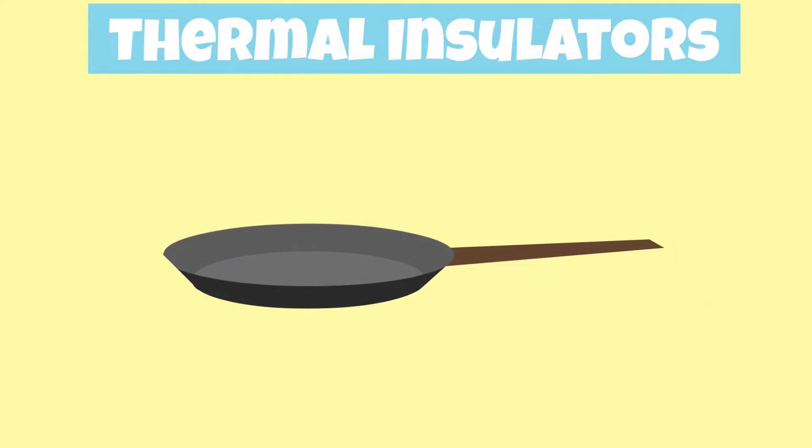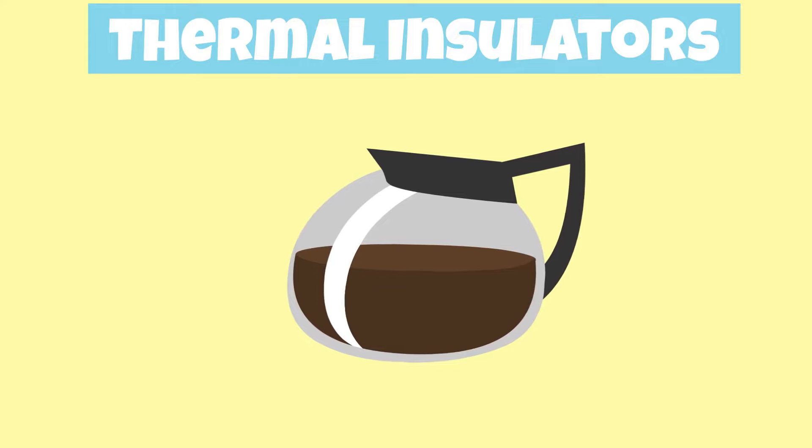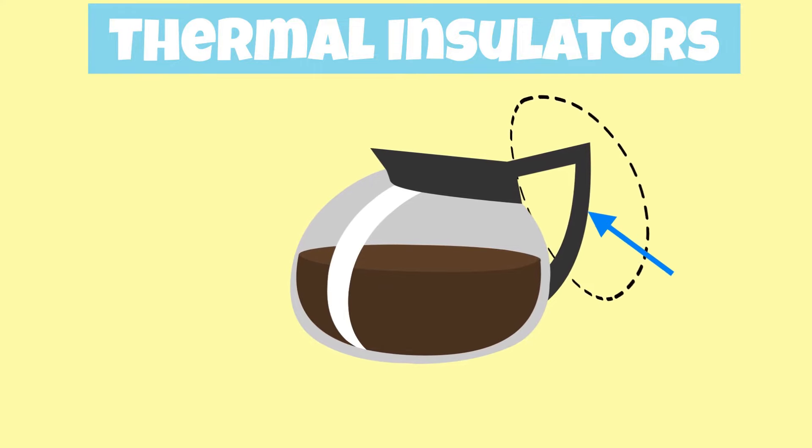That's also why most pots and pans have plastic or wooden handles. The matter inside of the plastic or wood restricts the flow of energy so it does not heat up.